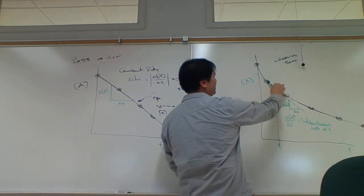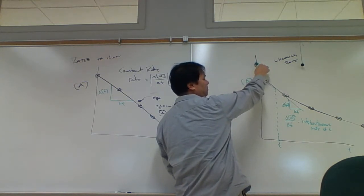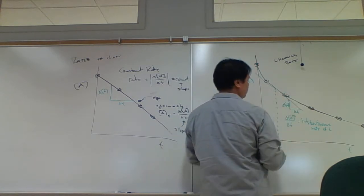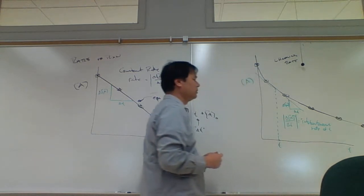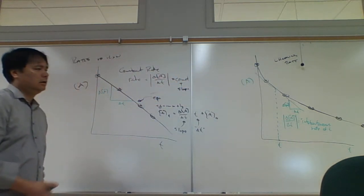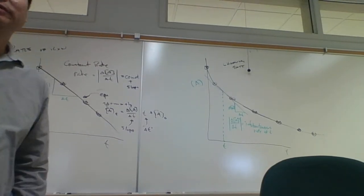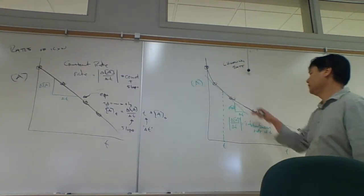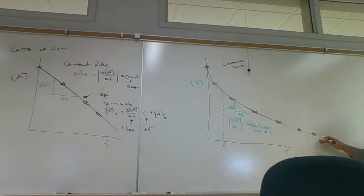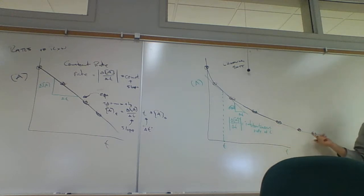The instantaneous rate is continually changing — it's very steep initially and then slows down. Since people like positive numbers, we take the absolute value of that. This makes it more difficult to predict. For example, how long does it take for 95% reaction? Let's say we started at 1 molar and end up at 0.05 molar — how long does that take? Over here with the constant rate it's pretty easy, but over here it's more of a challenge.